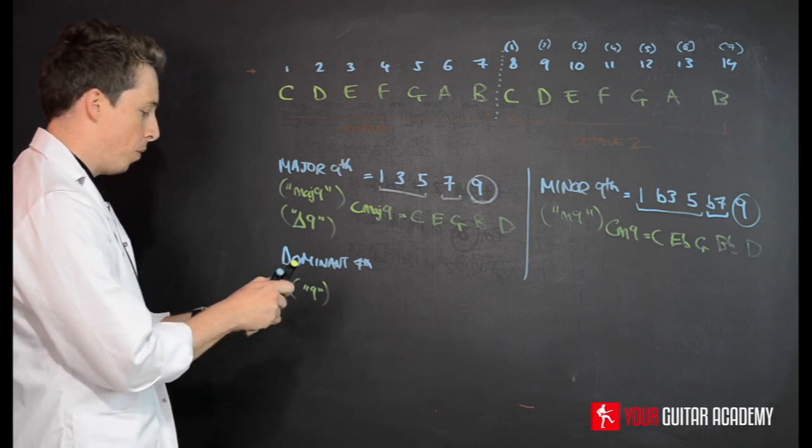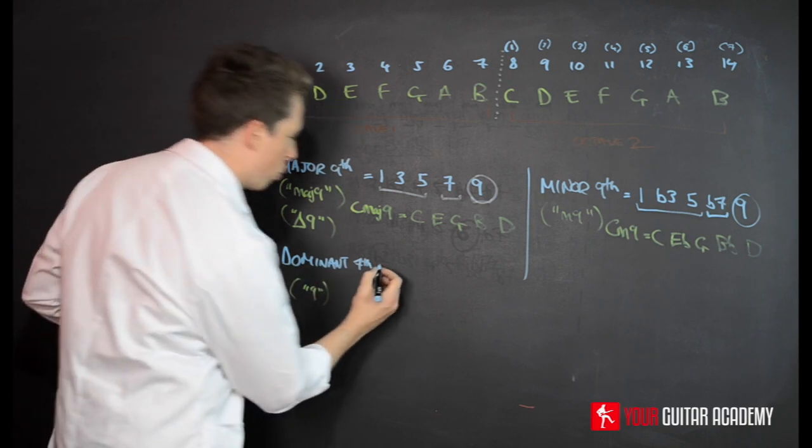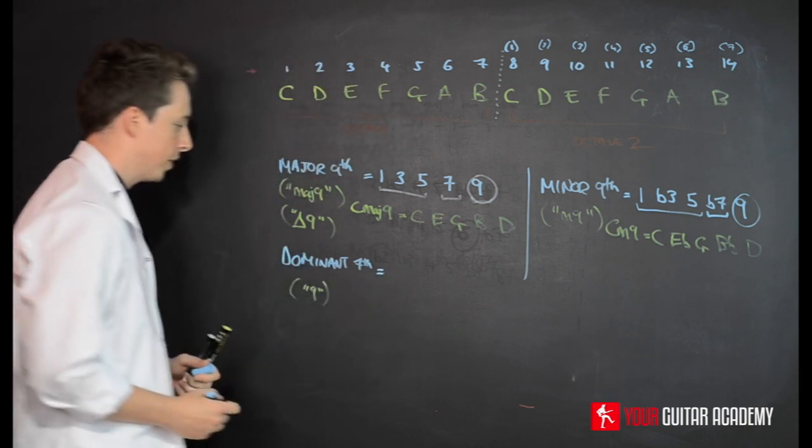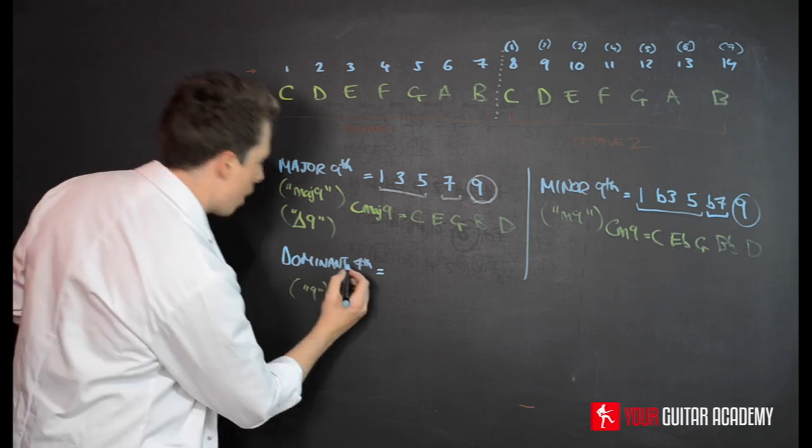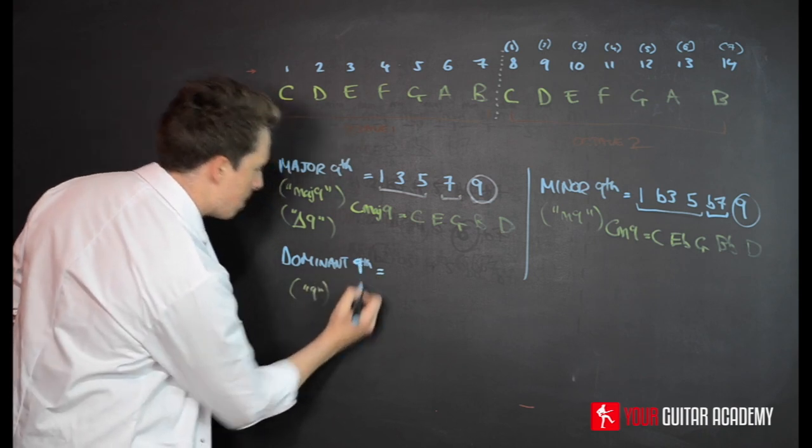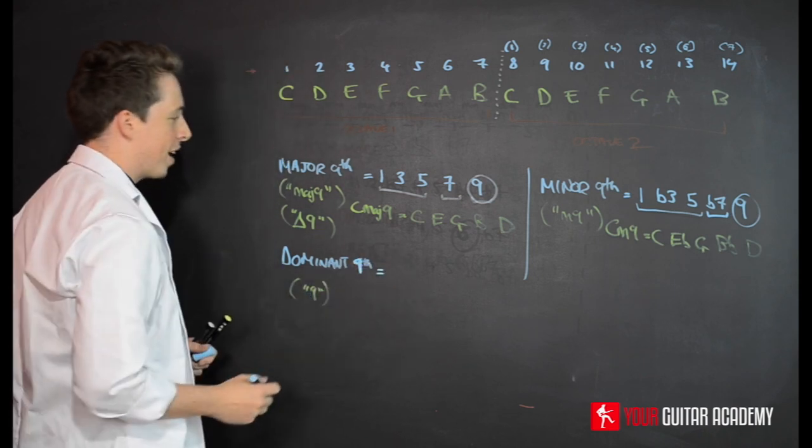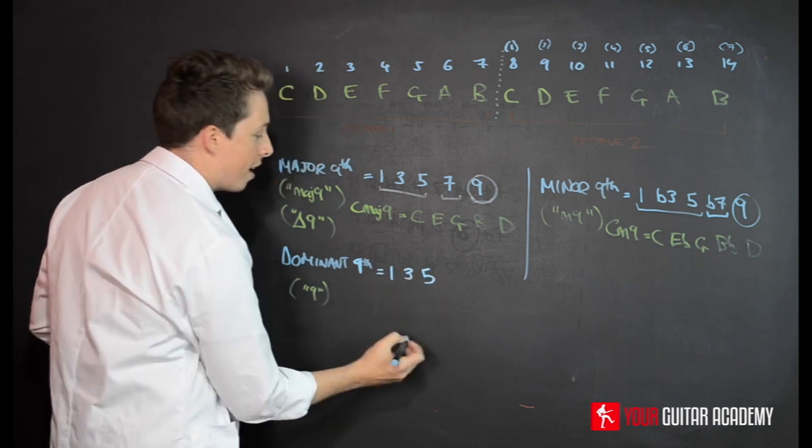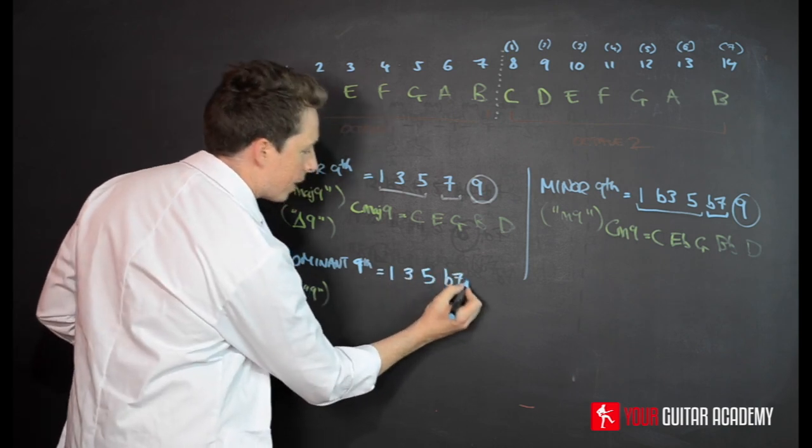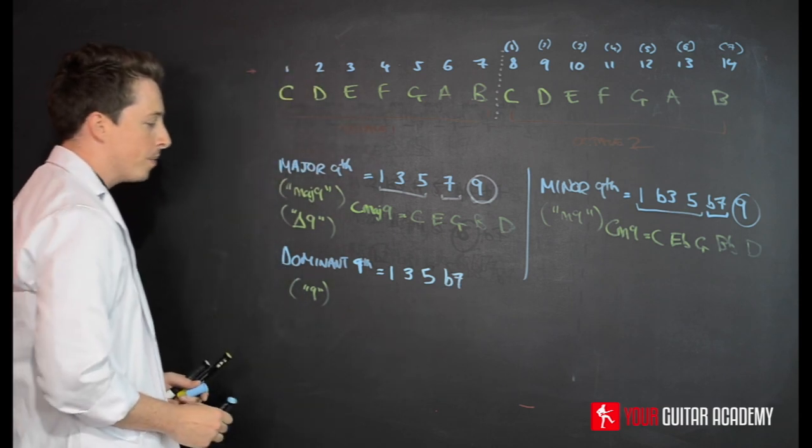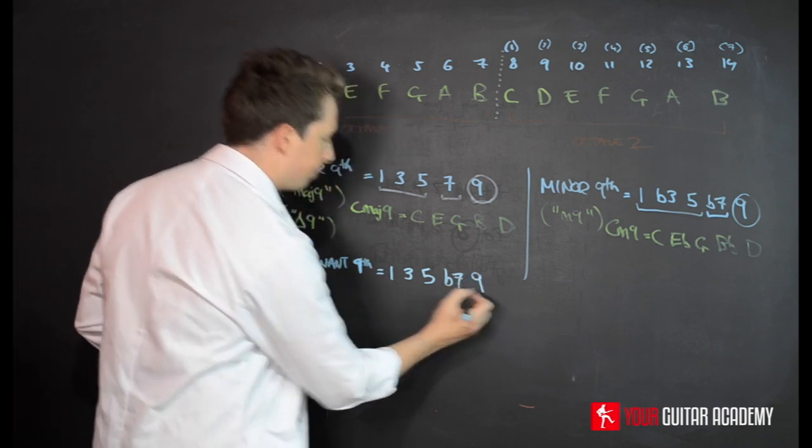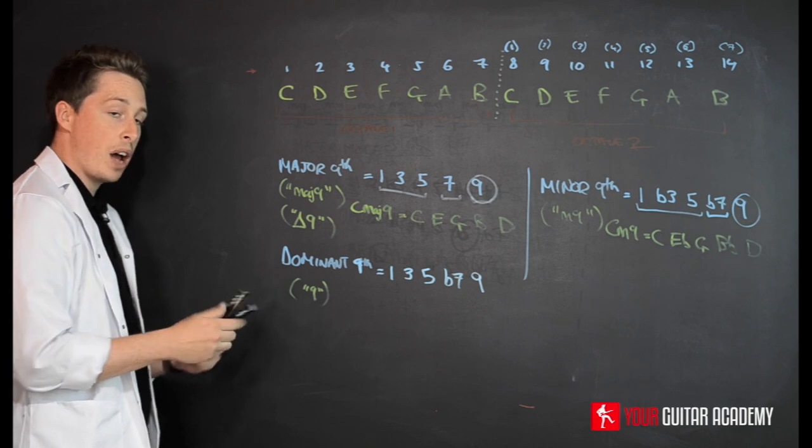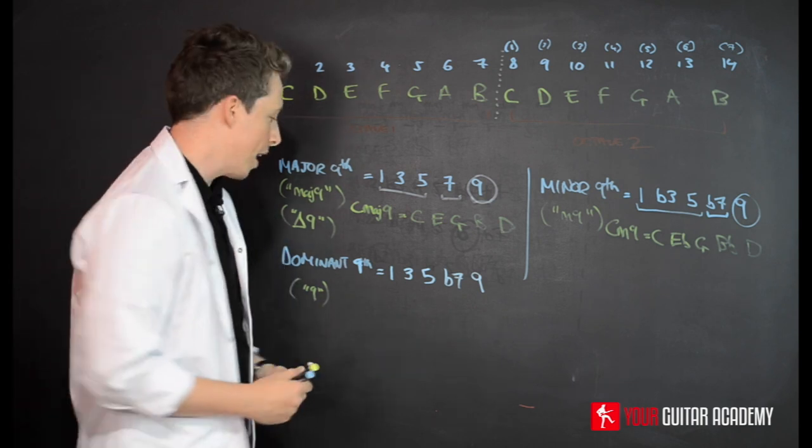Now, let's have a look at the chord construction itself. So with the dominant 9th chord, we're going to have the root, the 3rd and the 5th and then the flat 7. And then, at that point, we're going to add the 9th. So again, let's just break that down, shall we?